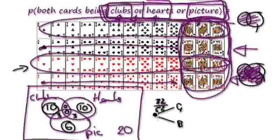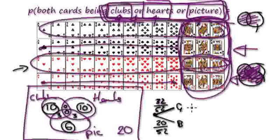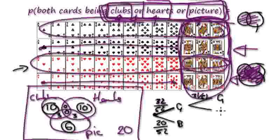If good is 32, then bad would be 20 over 52. Now, the probability of getting a good card having just picked a good card would be 31 out of 51. After getting a good card, the probability of getting a bad card would be 20 out of 51.